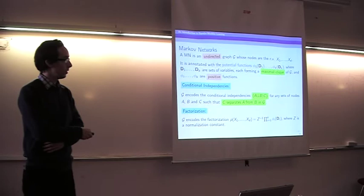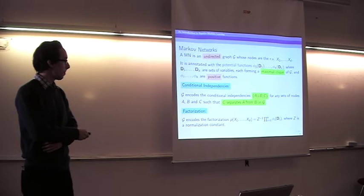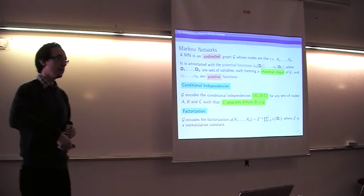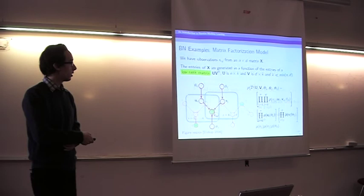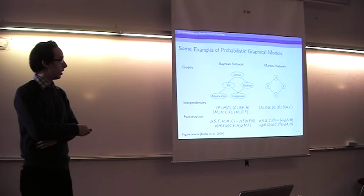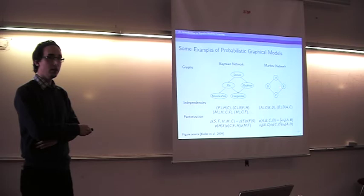Because of this factorization, we have a set of conditional independence relationships: two sets of nodes A and B are conditionally independent given another set C if C separates A and B in the graph — i.e., if C blocks all paths between A and B. For example, if all paths between A and C are blocked by B and D, then A is conditionally independent of C given D and B.